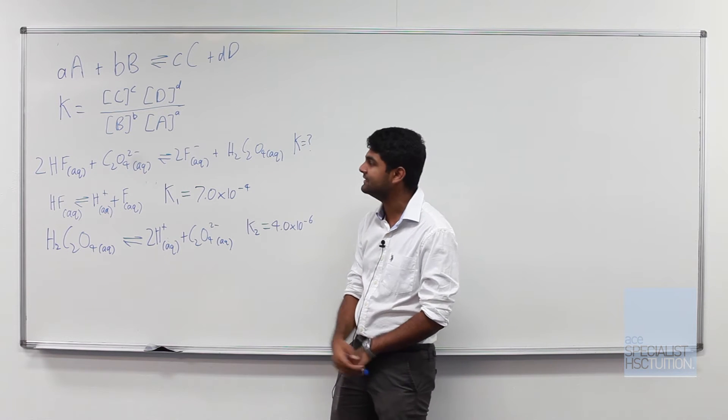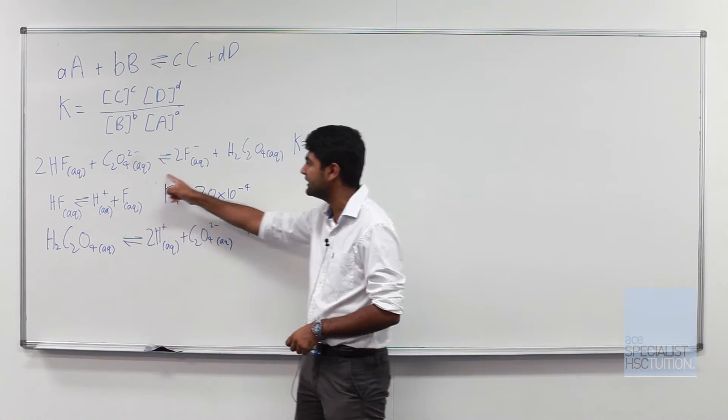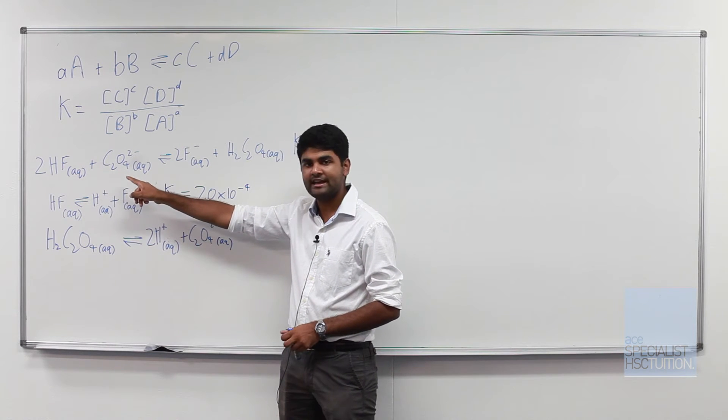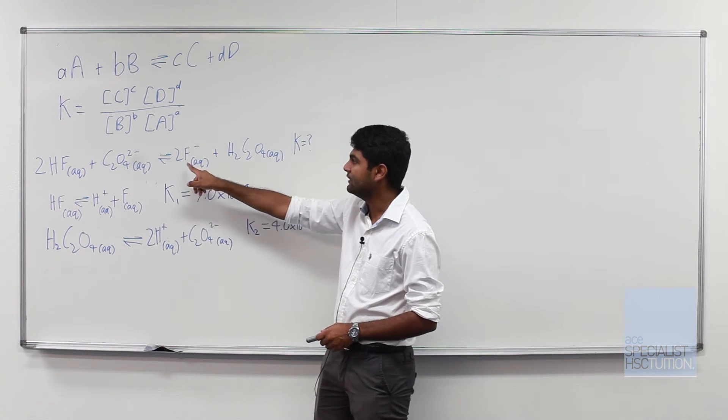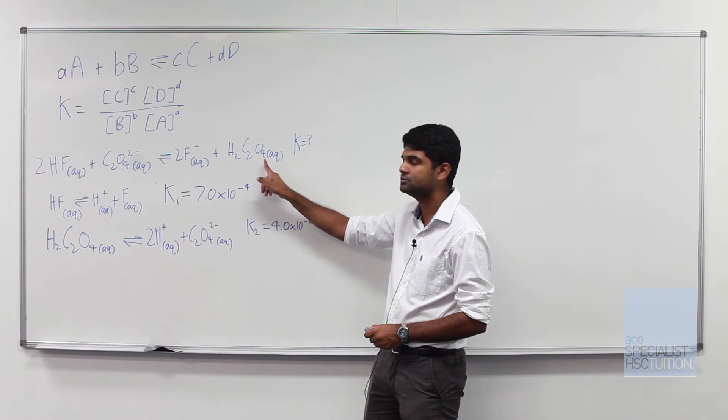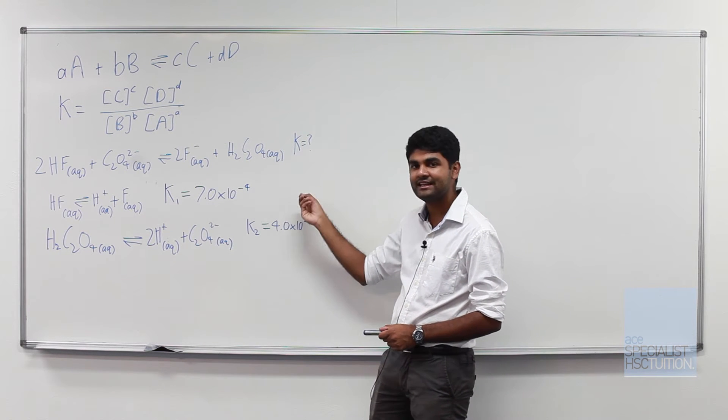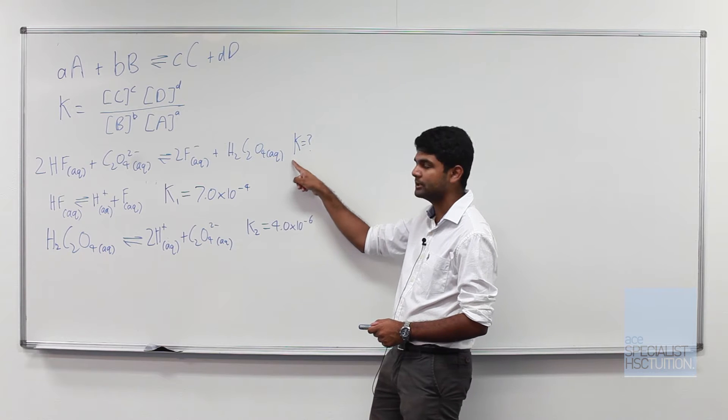Now our question for today is we have been given an equation here. We have HF reacting with C2O4^2- forming F- and H2C2O4 and we've been asked to calculate what is the equilibrium constant.